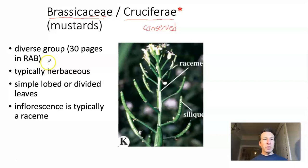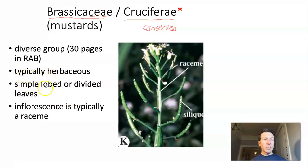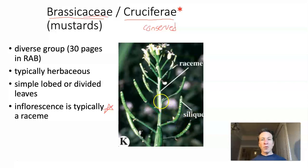Brassicaceae is a very diverse group — about 30 pages in Radford, Ahles, and Bell, larger than most families we've covered. For our purposes, these are typically herbaceous, with alternate, simple leaves that are lobed or divided. An important trait is that the inflorescence is a raceme — like a spike, but with pedicels on each flower.